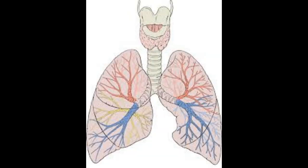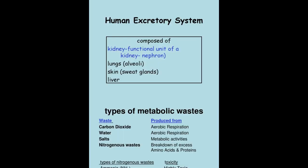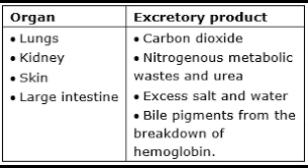Gaseous waste like carbon dioxide and water vapor are excreted during the process of respiration through the lungs. Most of the water is excreted in the form of urine and sweat. So, along with kidneys, organs like lungs, large intestine, skin, and liver also act as excretory organs in humans. I hope all of you understood the topic well. Thank you.